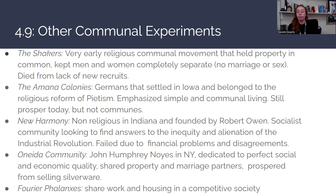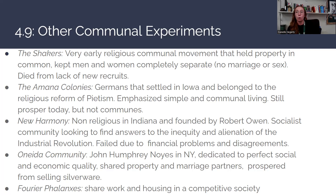New Harmony winds up failing due to financial problems and disagreements among its communal methods. The Oneida community is still well known because there is still Oneida, New York today. John Humphrey Noyes dedicates himself and this community to perfect social and economic equality — they share property and even share marriage partners, and they prosper from selling silverware. The Fourier phalanxes share work and housing in a competitive society, working together to get tasks done within their commune, sharing housing almost like public housing on a smaller scale. This group started because the industrial revolution and market revolution had made America a much more competitive society where housing was not as readily available.